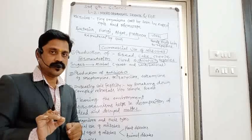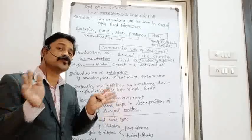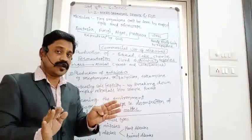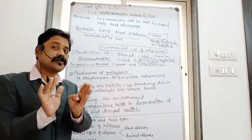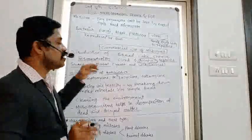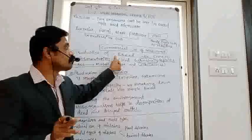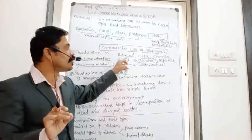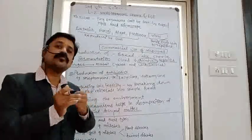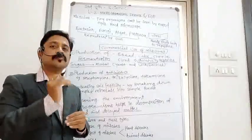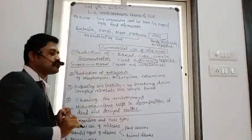Fermentation was discovered by Louis Pasteur in 1857. Microorganisms are very useful, which is why we are learning this science. They are used to make cake, bread, cheese, pastries, curd, and all these other products. These are very important commercial uses of microorganisms.